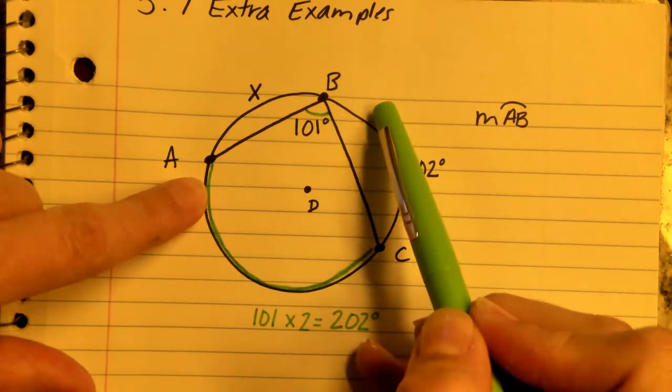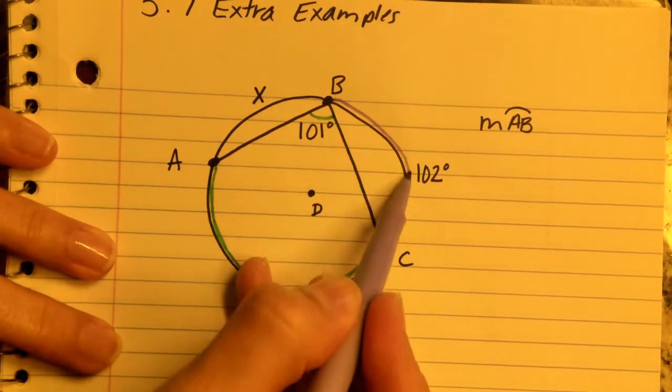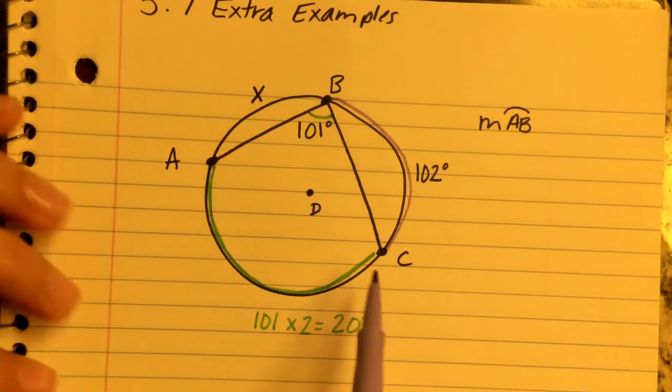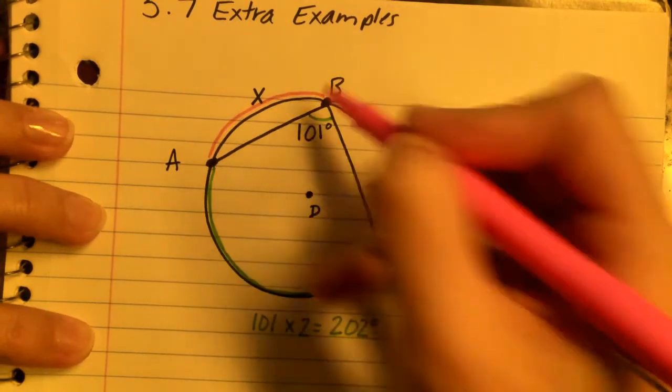So now we have arc BC and arc AC. How do we find arc AB? Well, we have 102 degrees, 202 degrees, and here is our X.